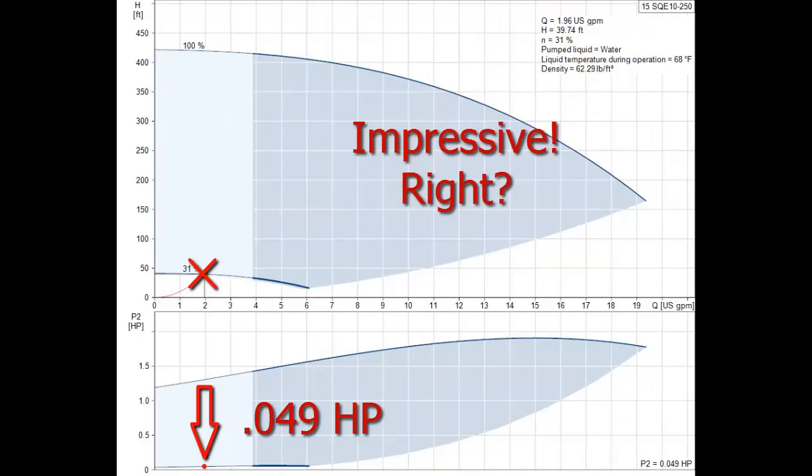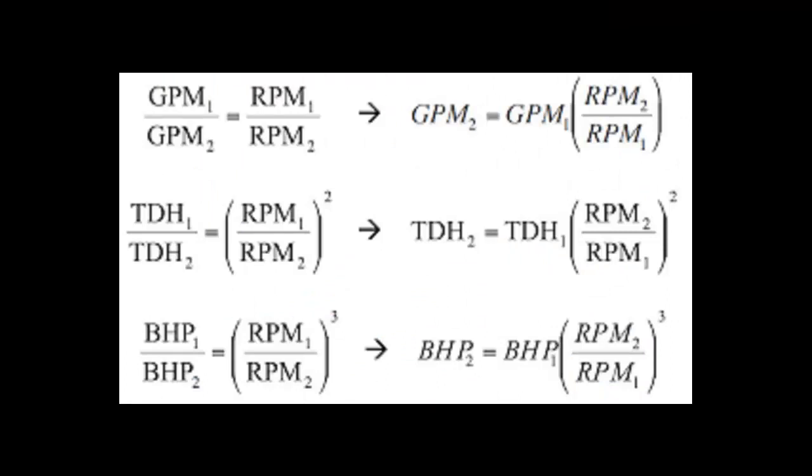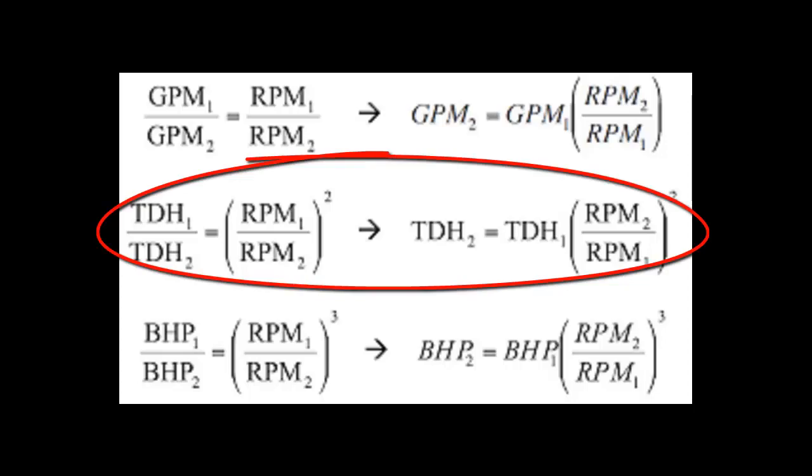That's impressive, right? However, the most important part of the affinity law, which many engineers conveniently try to forget, is that head or pressure is lost by the square of the speed.